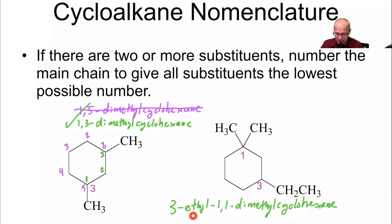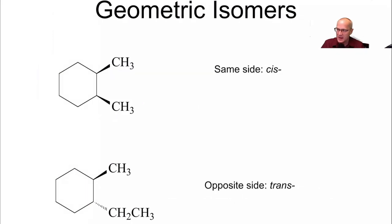But notice, ethyl came first because E comes before M in the alphabet. So, ethyl always comes first in front of methyl, I should say, even though the number three is bigger than 1. So, it's always the substituent's name, not the number that's associated with it.